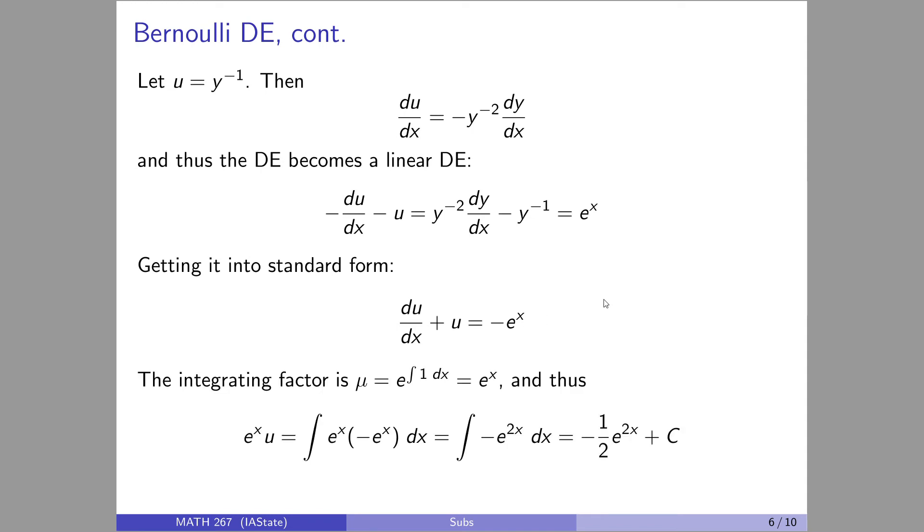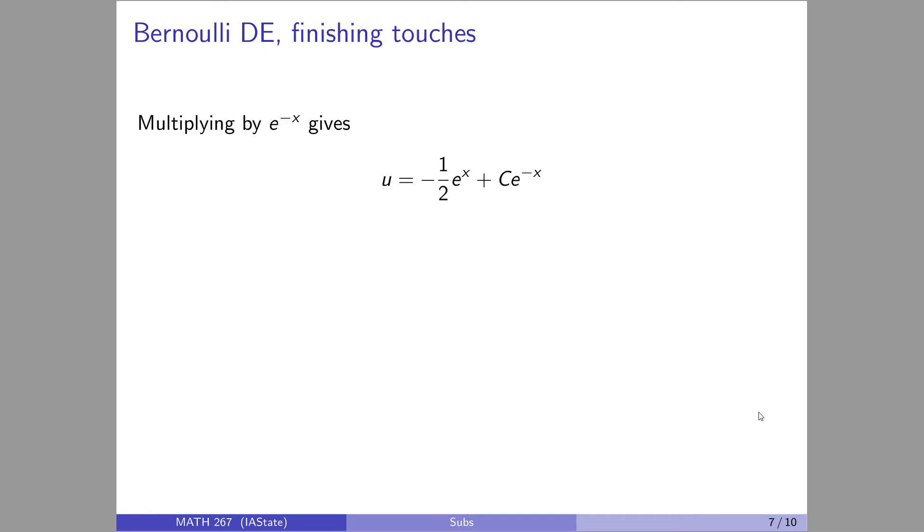Alright. So let's get the integrating factor. The coefficient on u is one. So the integrating factor is e to the x. And there we go. This went pretty smoothly. So what do we do now? Well, now we solve for u. So multiply both sides by e to the negative x or divide by one over e to the x, however you want to think of that. Multiplying that out gives me this.